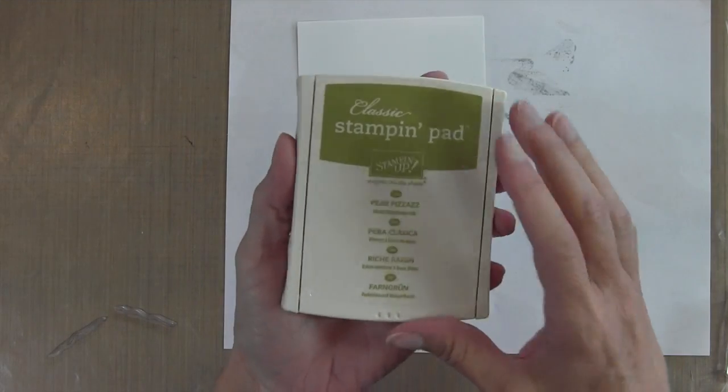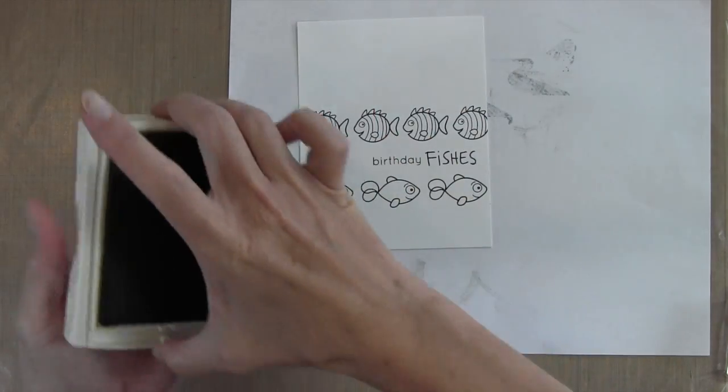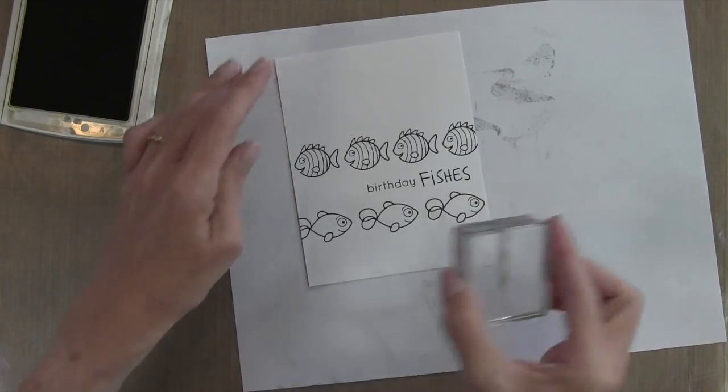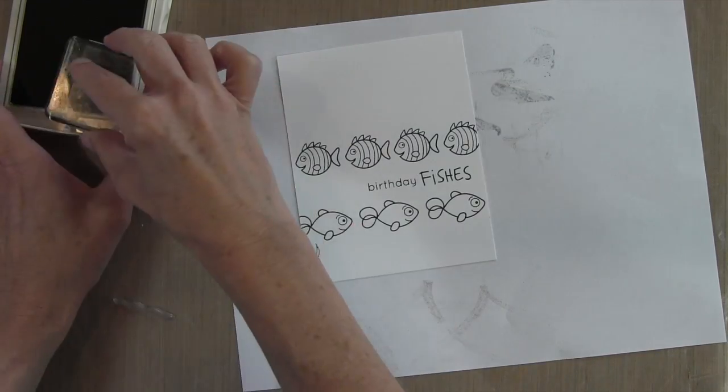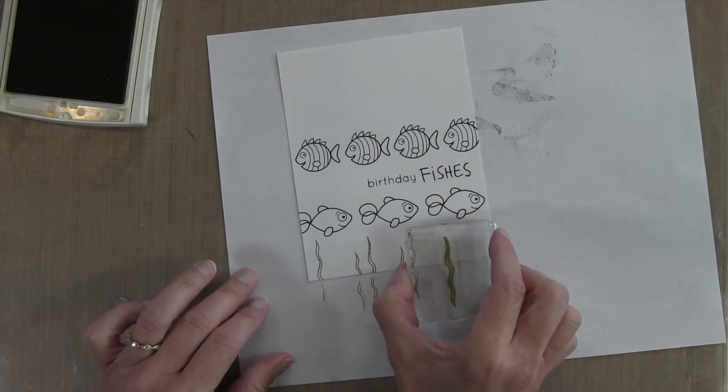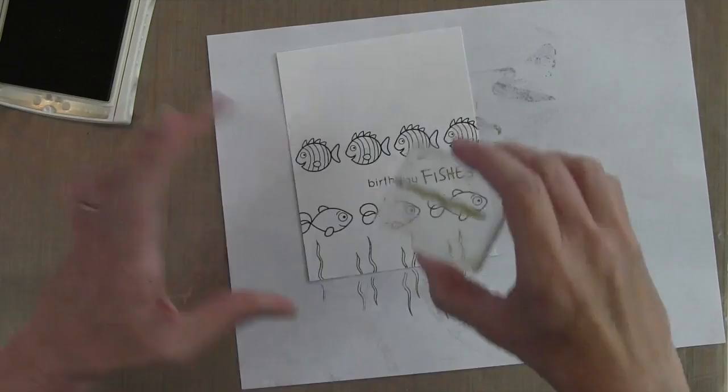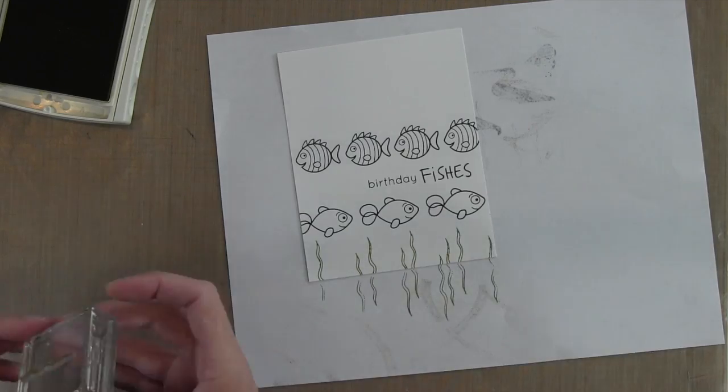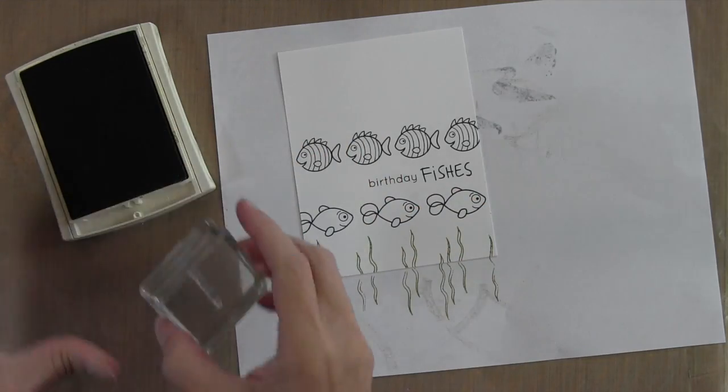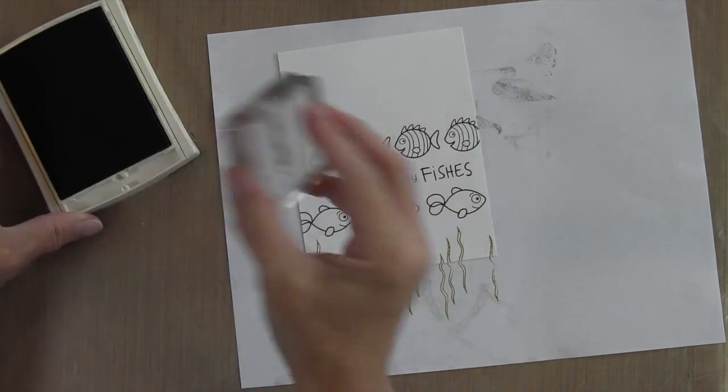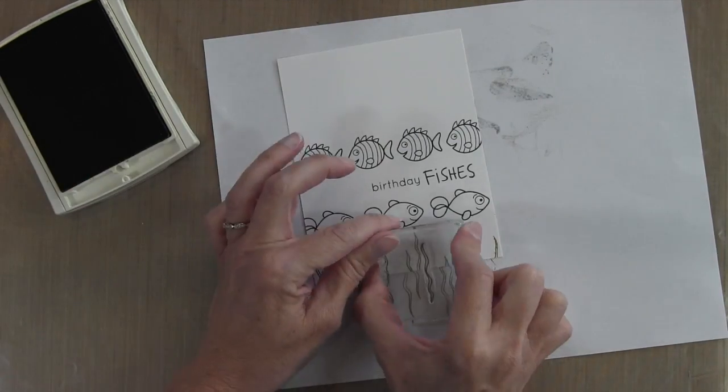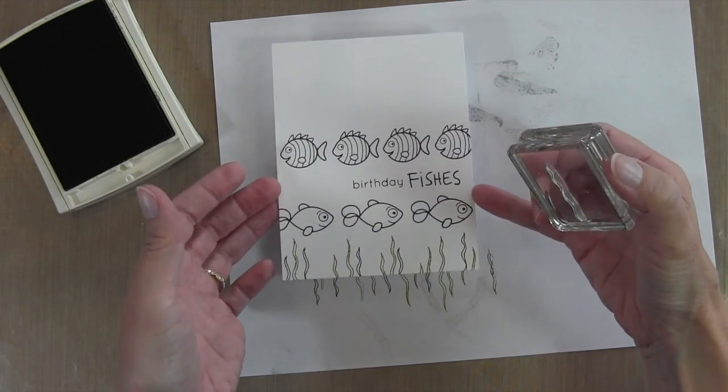At the bottom of the card, I'm going to stamp some grass-like kelp in the water. I'm going to use two different colors of green. The first one is Pear Pizzazz. I'm just going to use an acrylic block for this stamp with some scratch paper underneath to make cleanup easy. There are three different lines of these that come with the stamp set, so I'm using just one with the Pear Pizzazz, flipping it over so it doesn't look like the same one and varying the height. I'm also going to use Garden Green just for some variation and interest.